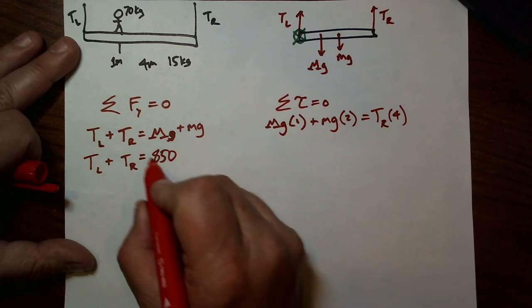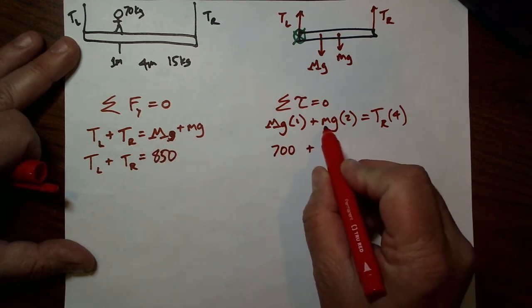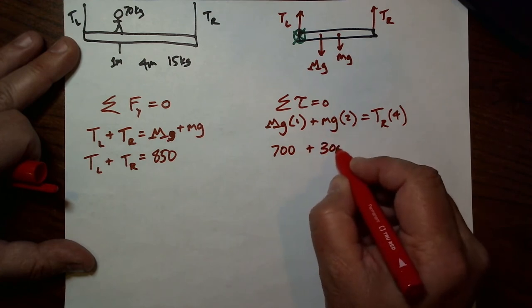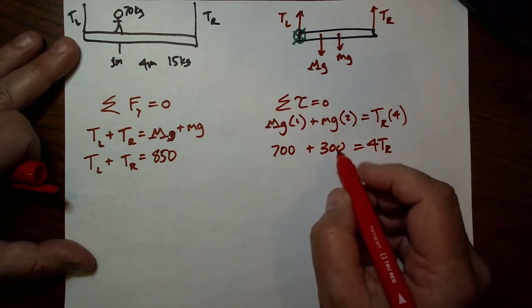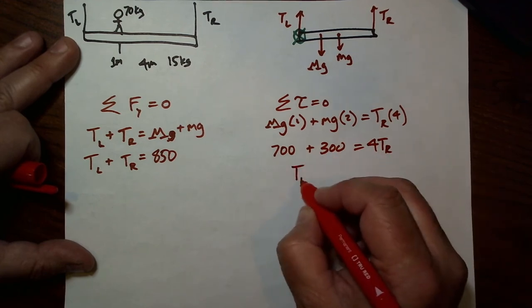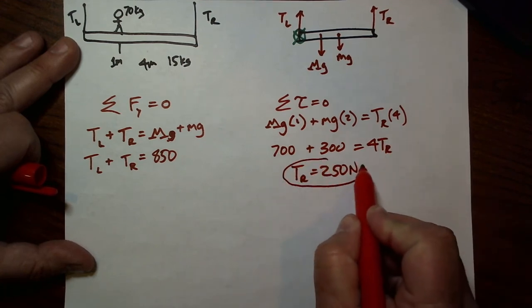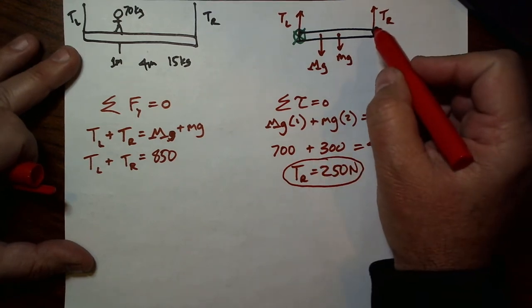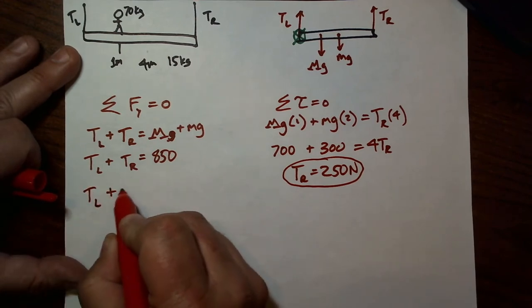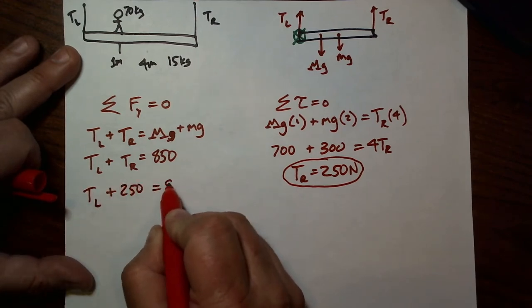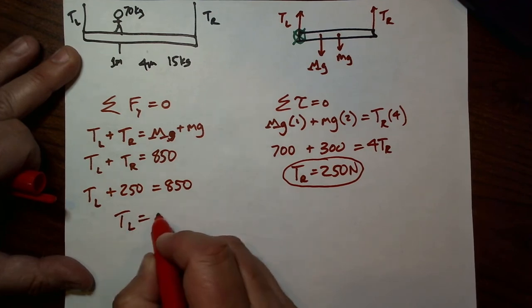So, M times G, that was 70 times 700 times one is 700. 15, 150 times two, 300. And that's going to equal four times TR. That's clearly 1,000, and 1,000 divided by four, 250 newtons. All right, so there's more tension in the right-hand rope, which we kind of expected because we have a lot more weight, a lot more mass on the plank. But let's put that back in. This says that TL plus 250 has to equal 850. If we subtract, TL turns out to be 600 newtons.